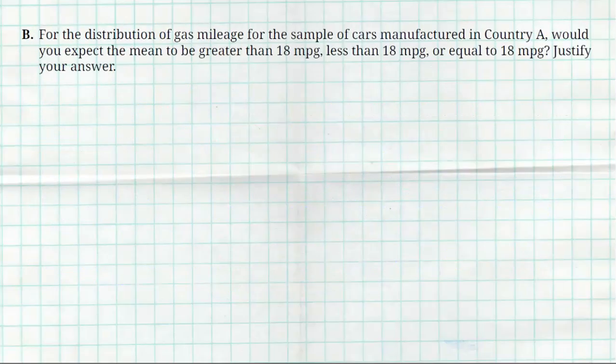All right, let's look at question B. For the distribution of gas mileage for the sample of cars in Country A, so we're only looking at Country A, would you expect the mean to be greater than 18 or less than 18 or equal to 18? Justify your answer.